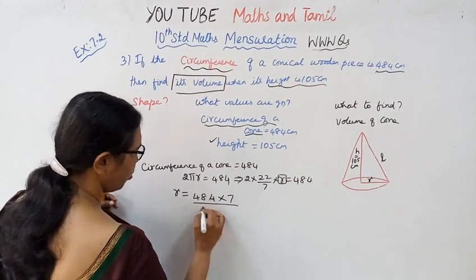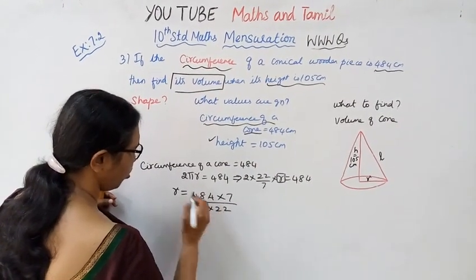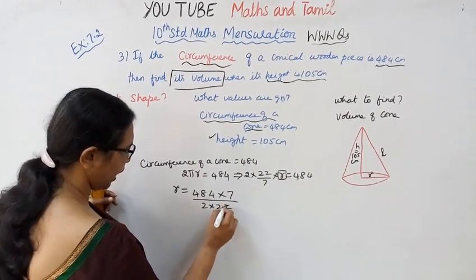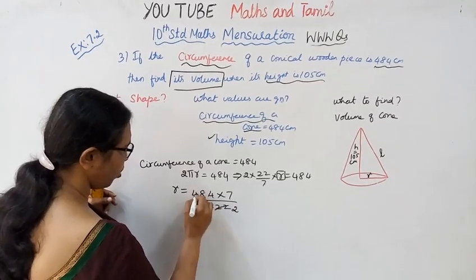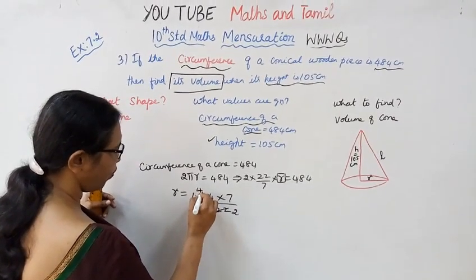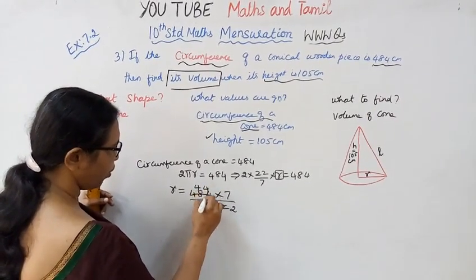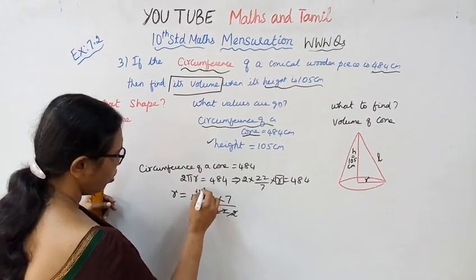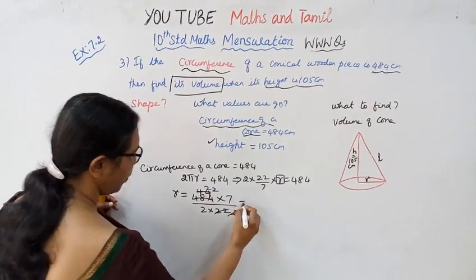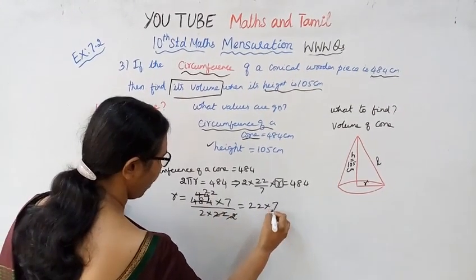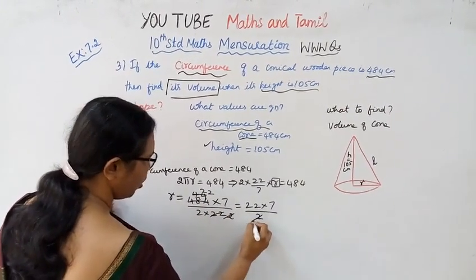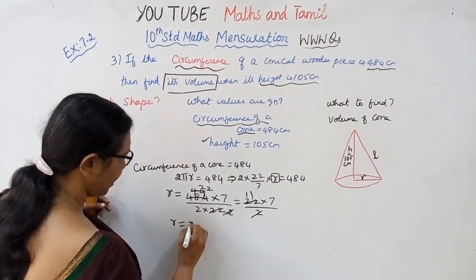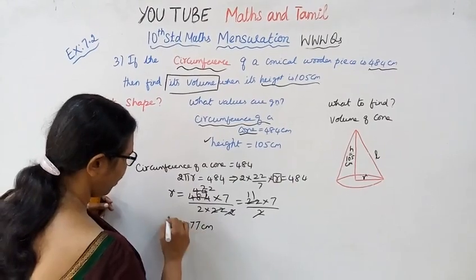Solving: r = 484 into 7 divided by 2 into 22. Cancelling: 484 divided by 44 gives 11, and 7 remains. So r = 77 cm.